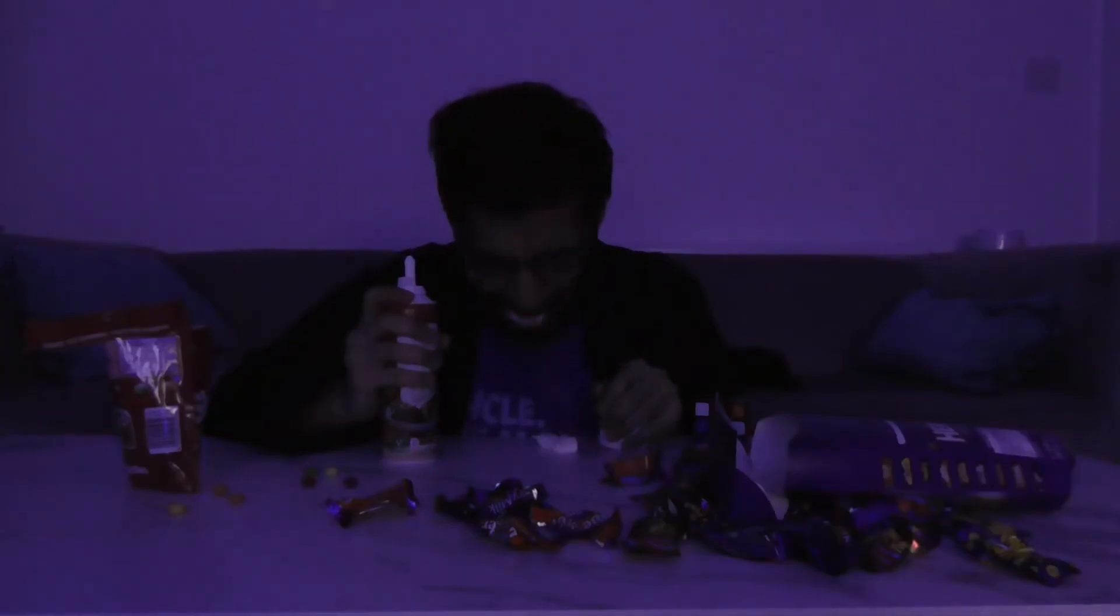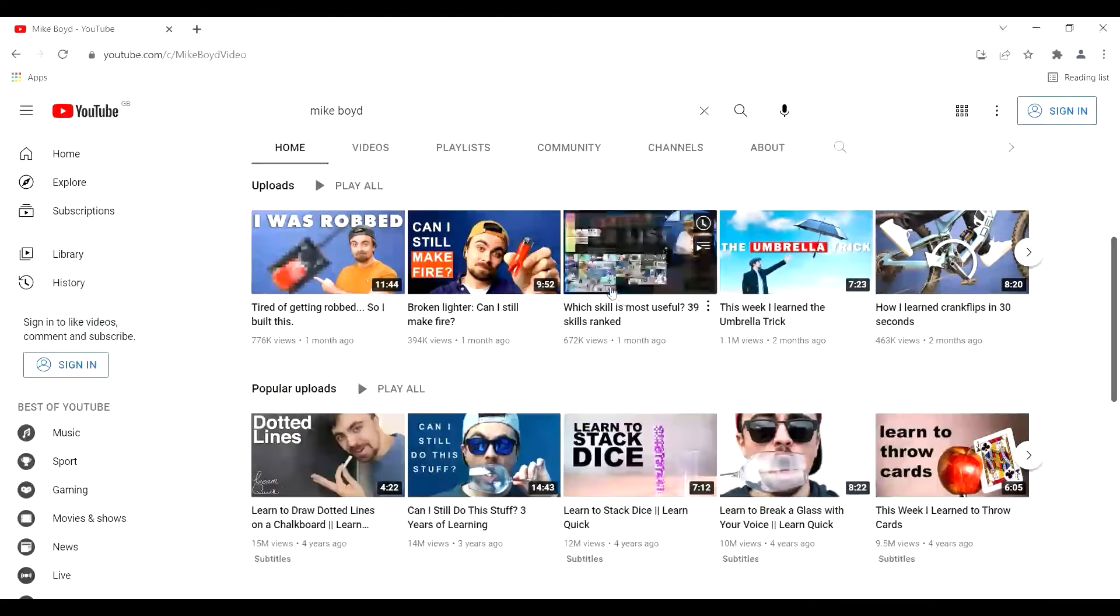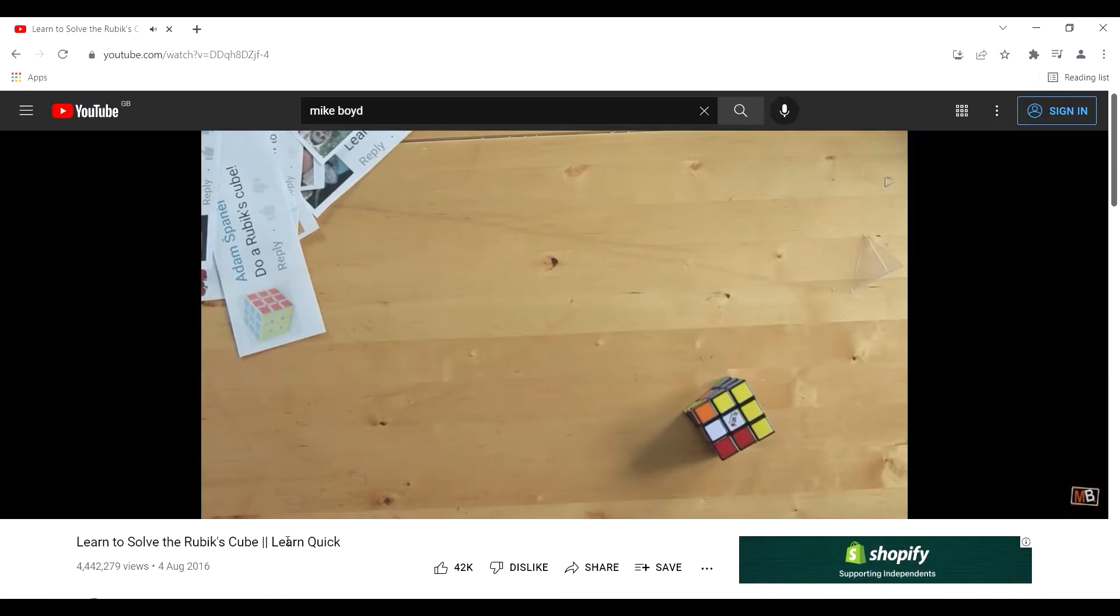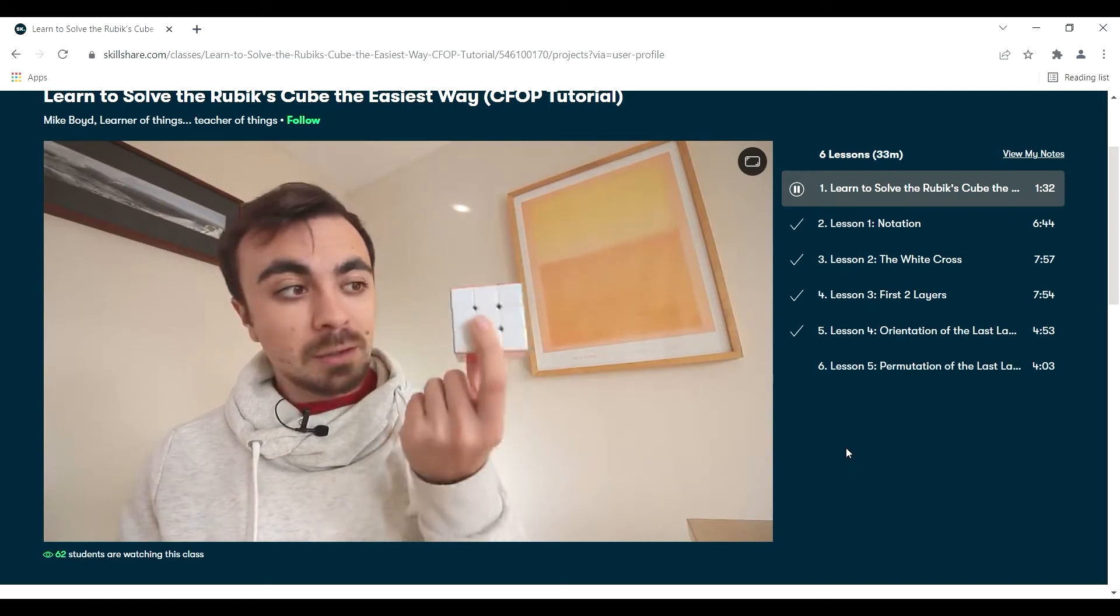I had to find someone who could teach me. This is Mike Boyd—he's a YouTuber who likes to learn new skills, and the one thing we have in common is the Rubik's Cube. He has a Skillshare course on how to solve the Rubik's Cube: make a white cross.